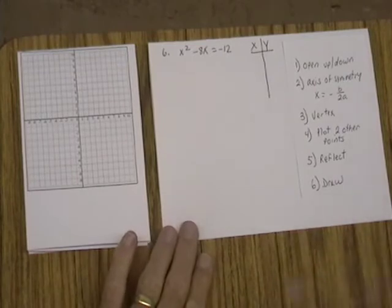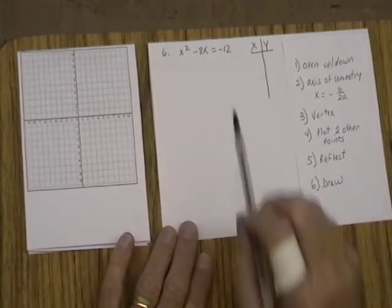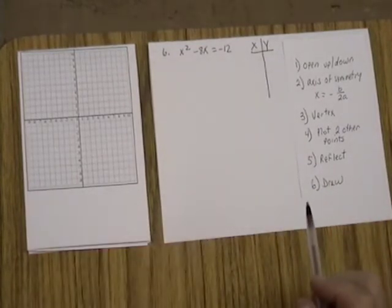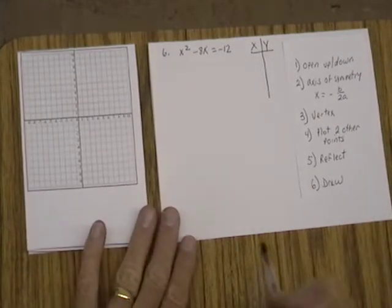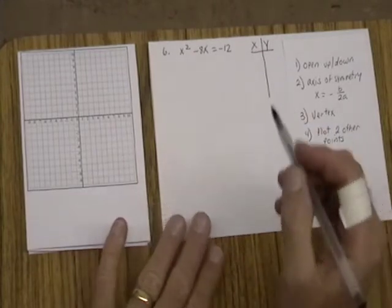Now what happens is the very first thing we need to do is put this in what we call standard form for quadratic formula or quadratic equation. So we need everything set equal to zero.